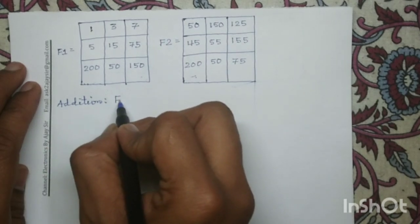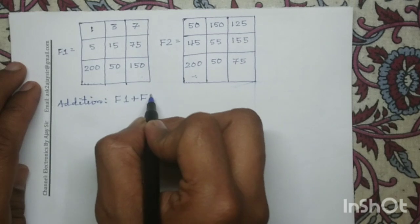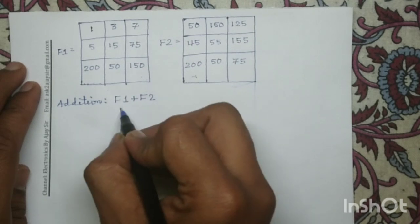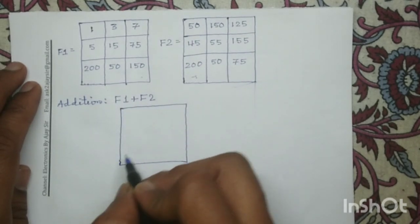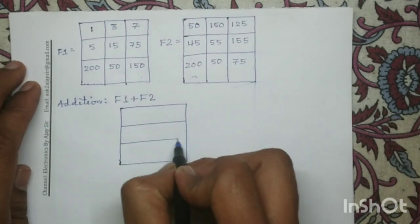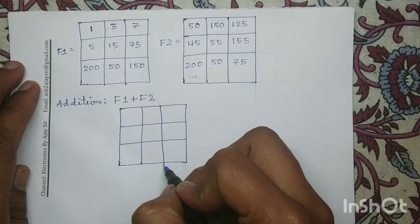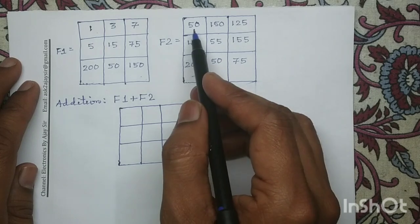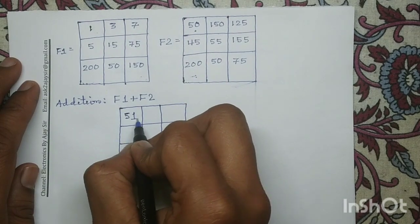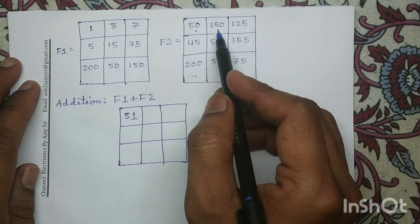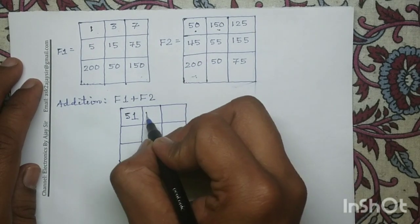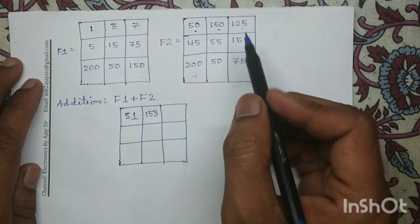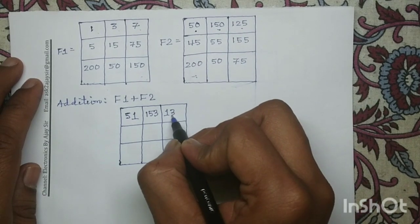The addition operation mathematical expression is f1 plus f2. Since the dimension of f1 and f2 are 3×3, the dimension of the output image f1 plus f2 is also 3×3. We will perform the addition operation pixel-wise: pixel value 1 added with pixel value 50 gives 51. Pixel value 3 added with pixel value 150 gives 153. Pixel value 7 added with pixel value 125 gives 132.